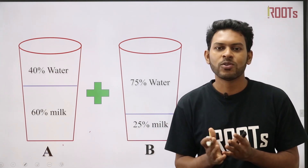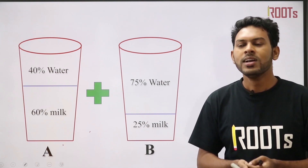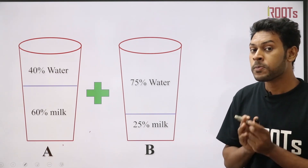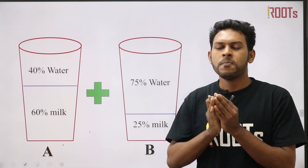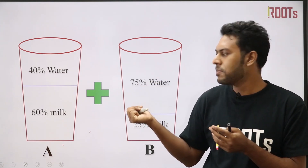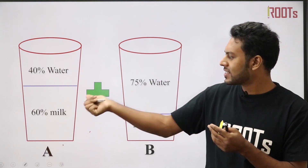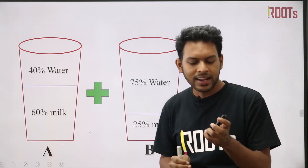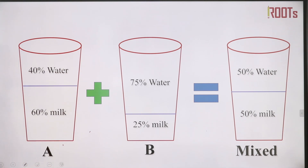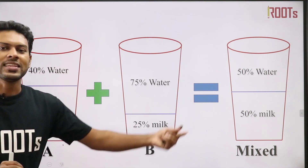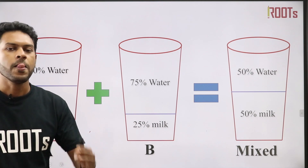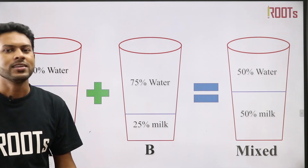What do you know? You don't know how many of these two containers have been mixed. If you want to find how many of each are used, the resulting mixture has 50% milk and 50% water.